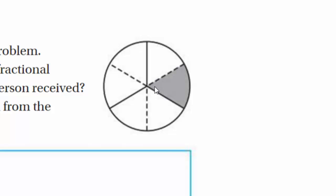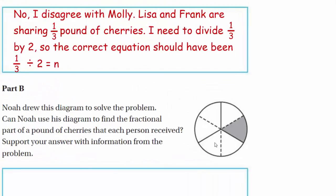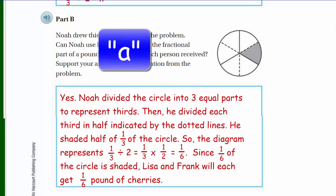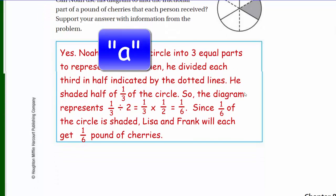Since one sixth of the circle is shaded, Lisa and Frank will each get one sixth pound of cherries.